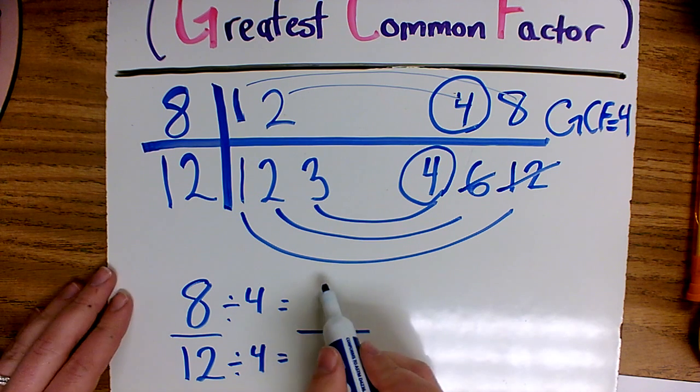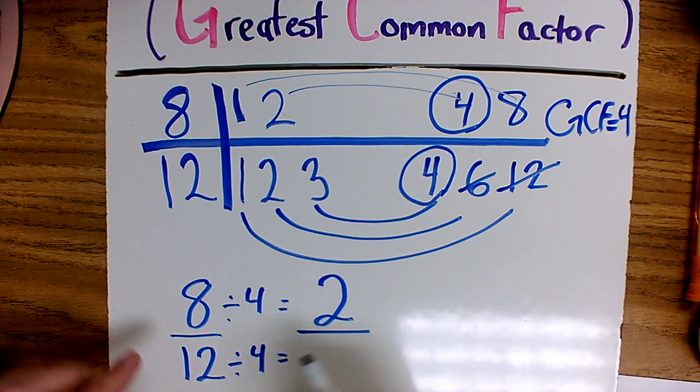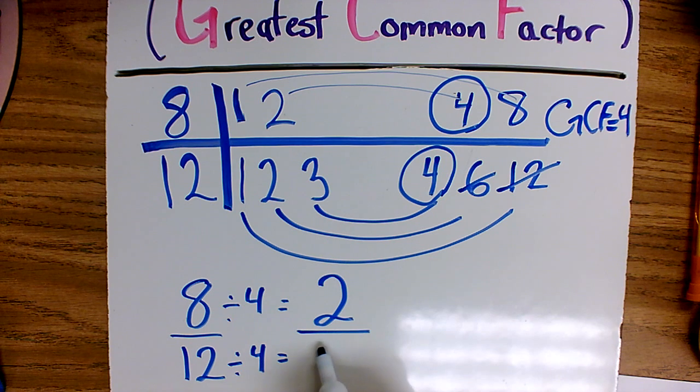8 divided by 4 is 2. 12 divided by 4 is 3. 8 twelfths in simplest or reduced form is 2 thirds.